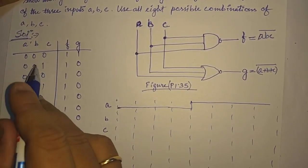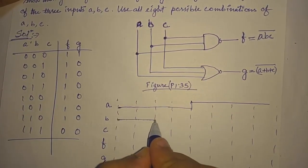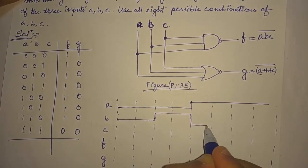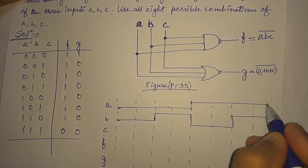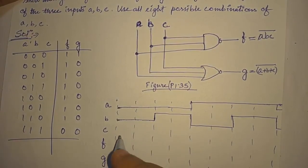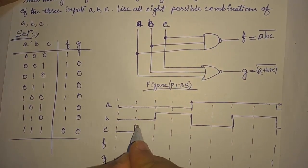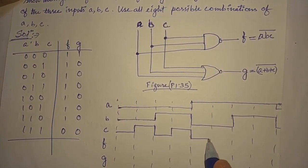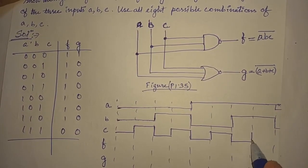Then we have B, which changes every 2 clock cycles: it goes 0 for 2 cycles, then changes to 1, then back to 0, then 1, then 0 again. For C, we need to cover all 8 combinations, so C alternates every cycle: 0, 1, 0, 1, 0, 1, 0, 1.